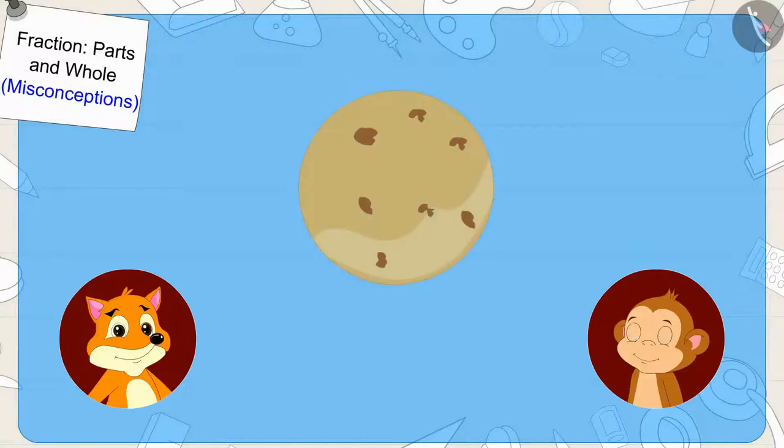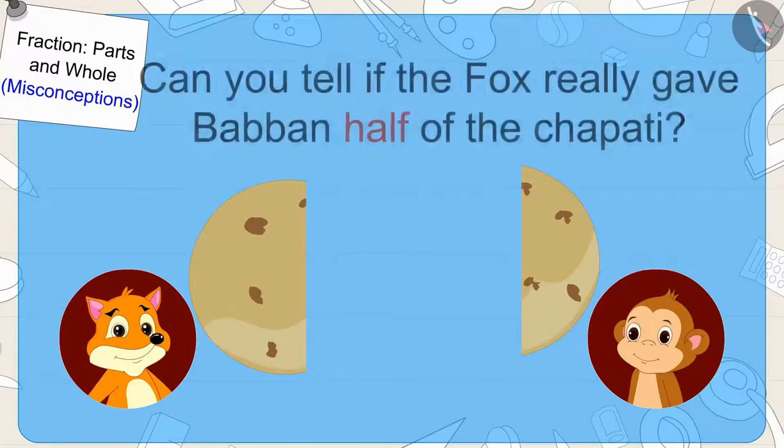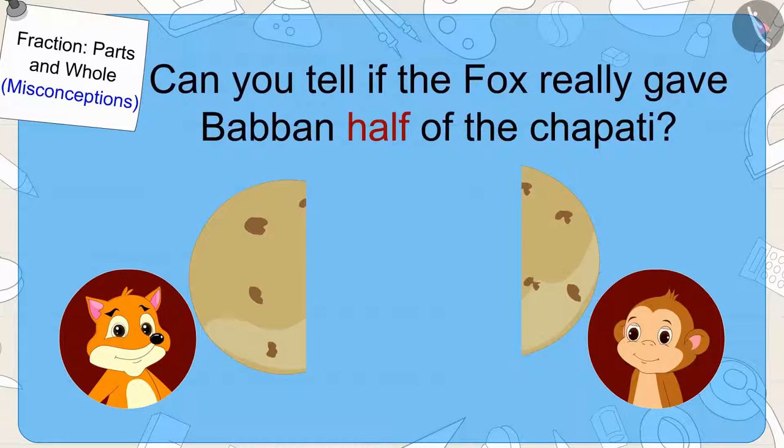Now, both of them decided to divide the chapati in two halves. The fox divided the chapati in two parts like this and gave one part to Babban. Can you tell if the fox really gave Babban half of the chapati?